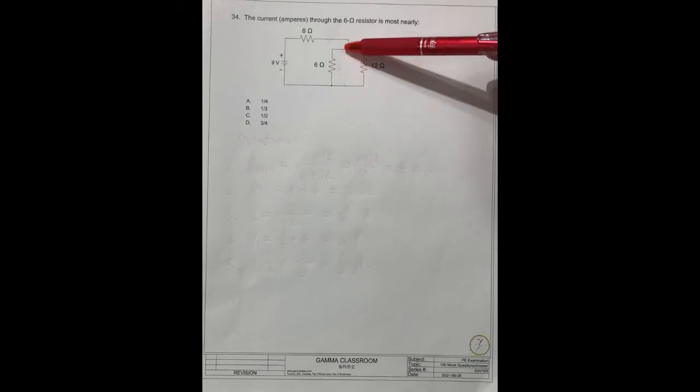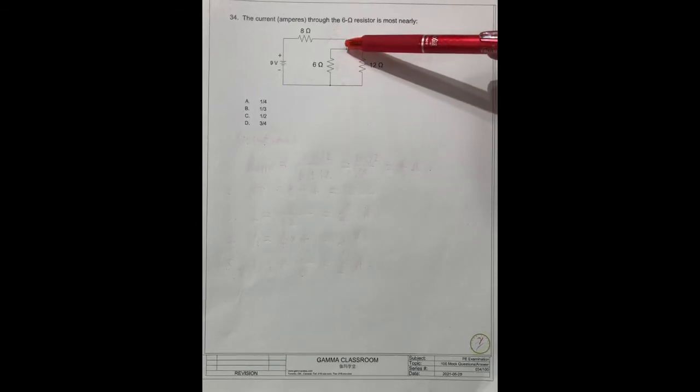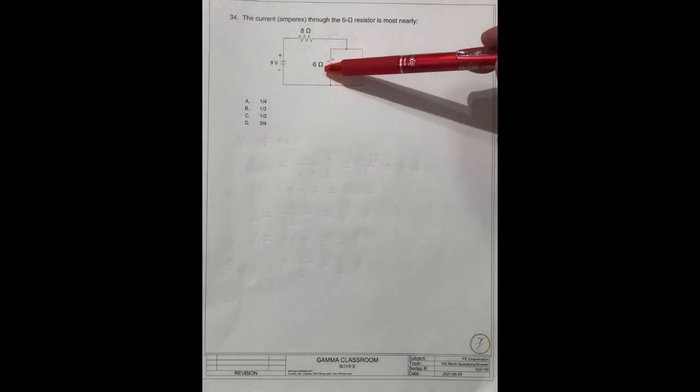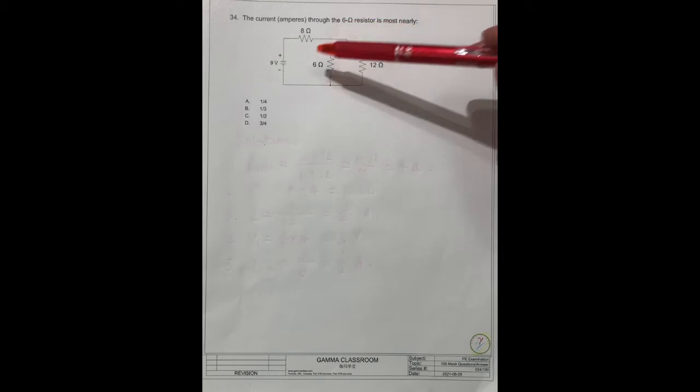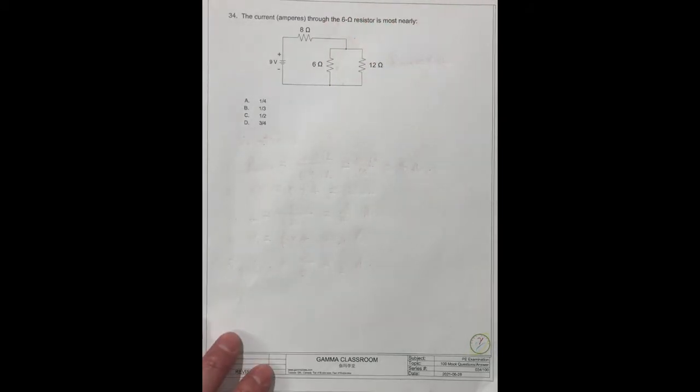Then we can calculate the voltage between these two points. Then use the voltage to divide the resistor, we can get the current. Or you use a different way. It's very easy. For the solution.